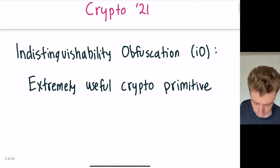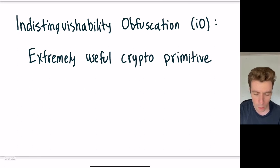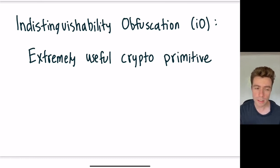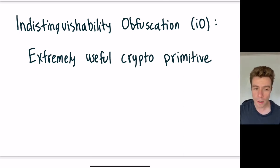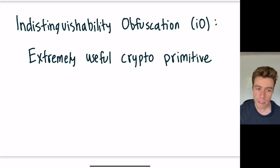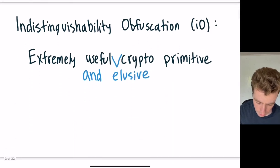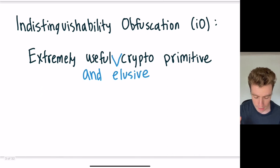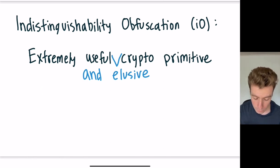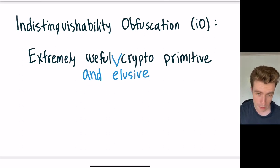As a starting point, let's introduce indistinguishability obfuscation. All we need to know for this talk is that it's an extremely useful cryptographic primitive, and provably secure constructions of indistinguishability obfuscation imply secure constructions of a tremendous wealth of exciting cryptographic primitives. IO has been the object of intense study for the last 10 years or so, and only very recently has there been a construction of IO which can be proved secure based on relatively standard assumptions.